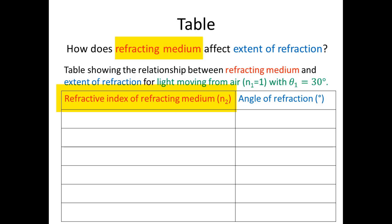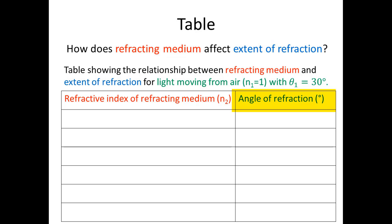Refracting medium and the refractive index of the refracting medium are related to one another. Similarly, the dependent variable extent of refraction is qualitative, so we use the quantitative indicator angle of refraction — a nice numerical measurement. We will need to be careful when interpreting what angle of refraction tells us about extent of refraction. Now we're ready to collect our data.